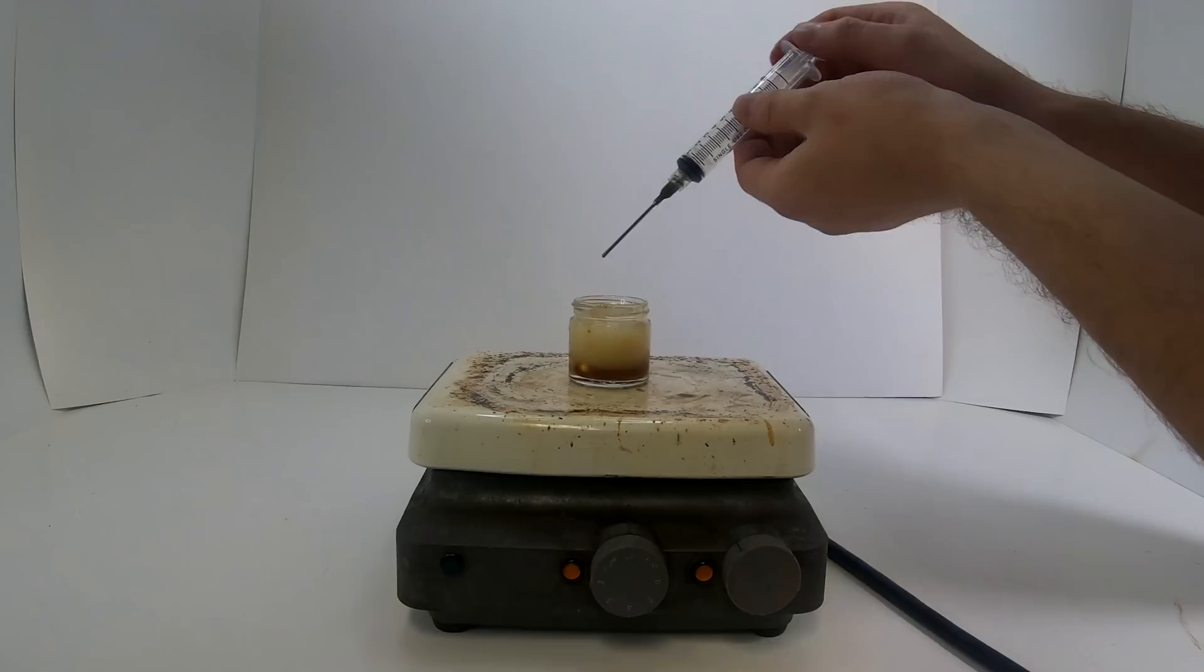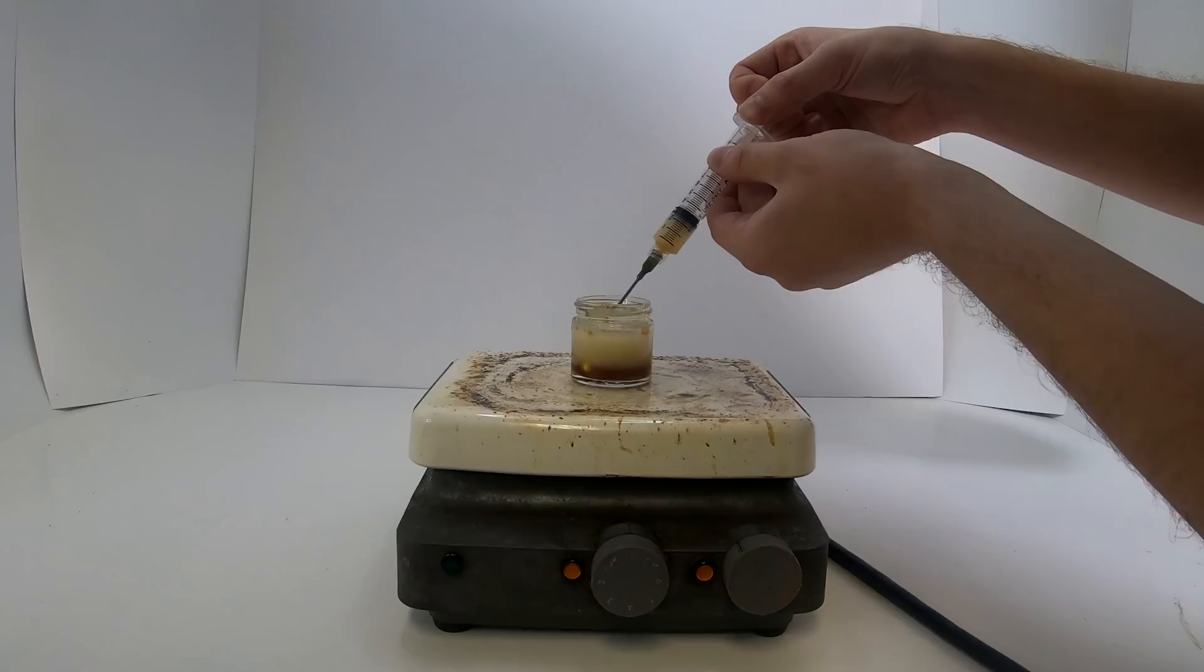I placed the jar onto a hot plate and let it stir for a bit at low heat before letting it settle for a while so I could remove the water with a syringe.